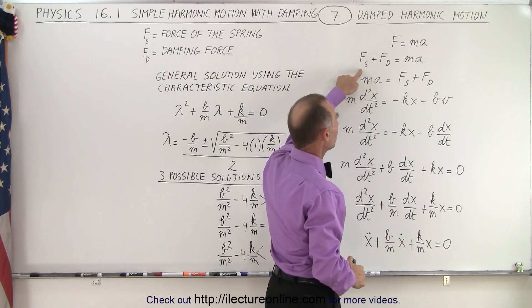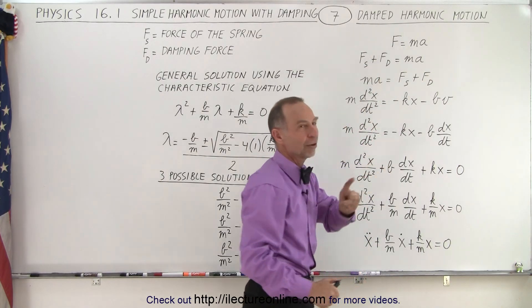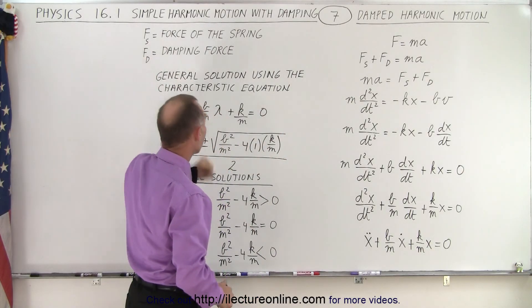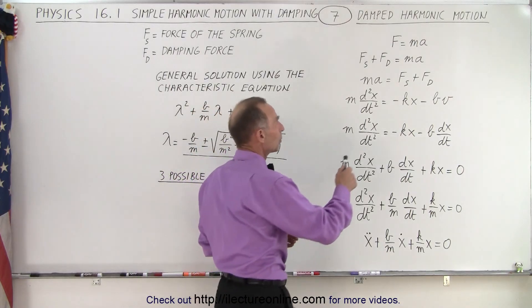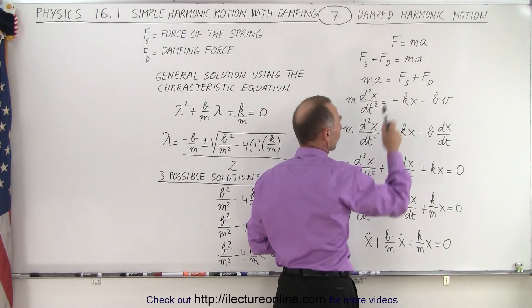There's the force of the spring and the force because of the damping effect. And so this is where these are defined. Let's turn the equation around. MA equals the force from the spring plus the force due to damping.